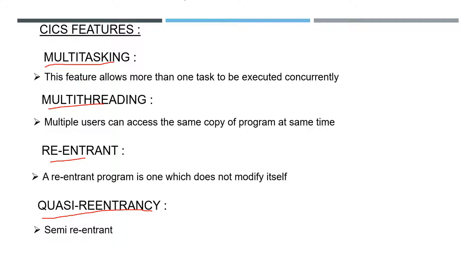For example, if User 1 and User 2 are there — firstly User 1 gives an input request, then that request is transferred to the processing stage. While it is in the processing stage, another user gives another request to the same system.